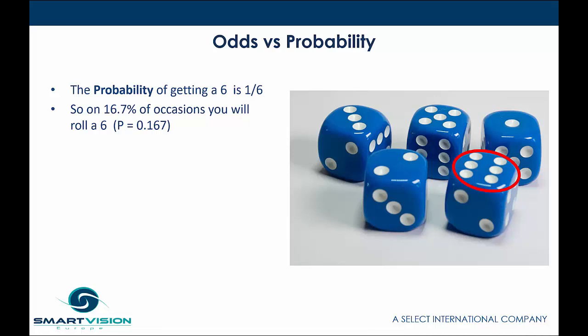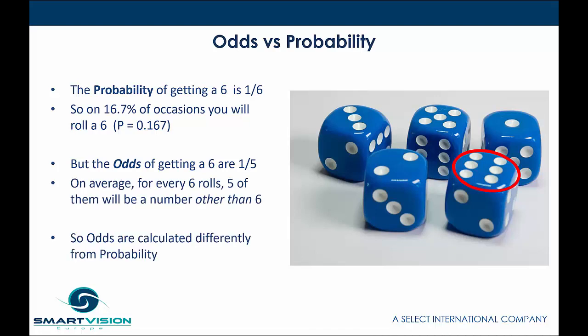Odds are different. Odds look at the number of occasions where you're not getting a six compared to the number of occasions where you do get a six. In that case, the odds of getting a six are one over five — in gambling terms, five to one chance of getting a value other than six. So for every six rolls, five of them will be a number other than six. Odds are calculated differently from probability.